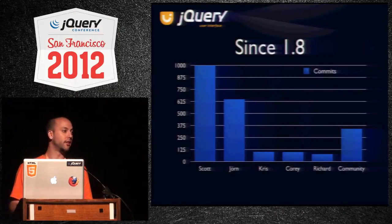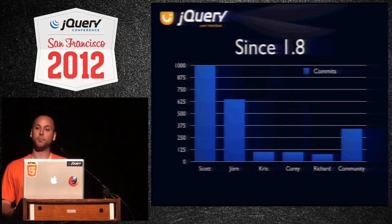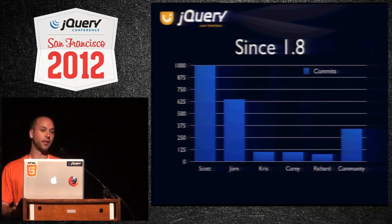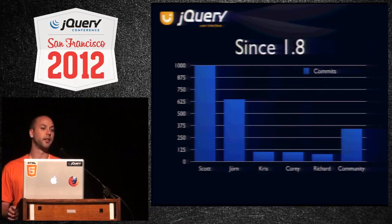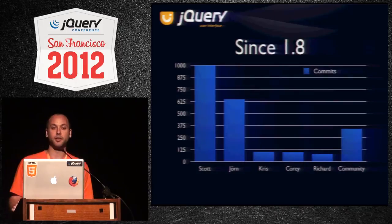Chris and Corey are pretty new team members who joined about a year ago. Chris has been working on menu — he started with a whole bunch of bug fixes across various widgets and then moved on to finalizing the menu widget. Corey has been doing a lot of work on effects and animations, and he's also been working closely with the core team on animations coming in 1.8 for core. He's also on the infrastructure team, helping a lot with getting our new infrastructure set up.